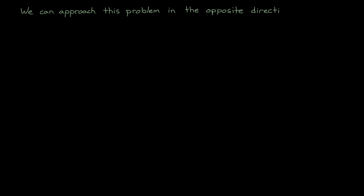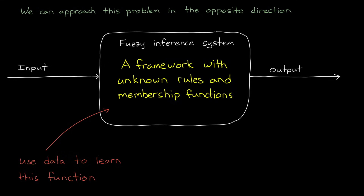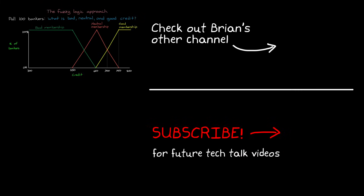Before I end this video, I just want to talk about one other benefit of fuzzy logic: we can approach the problem in the opposite direction. We can start by building a fuzzy inference system with essentially an empty framework, but no real understanding of membership functions or the rules themselves. And then we can use data to systematically learn the parameters of that inference system. In this way, we can use machine learning to tune the inference system, similar to tuning a neural network. But in the end, we've trained a model that's much easier to understand since the rules are interpretable. This is helpful for systems where verification and certification are important. I'm just going to leave you here thinking about that interesting statement, but we're going to come back to it throughout the next couple of videos. So if you don't want to miss those or any other future Tech Talk videos, don't forget to subscribe to this channel.